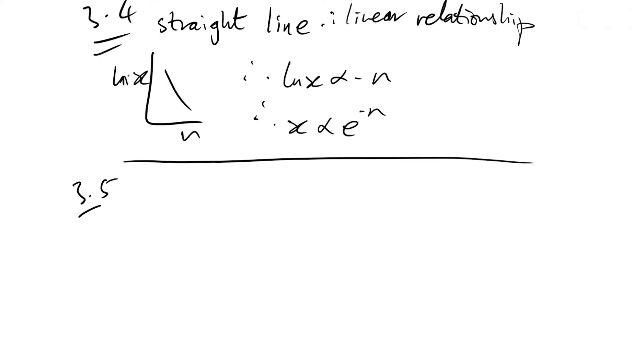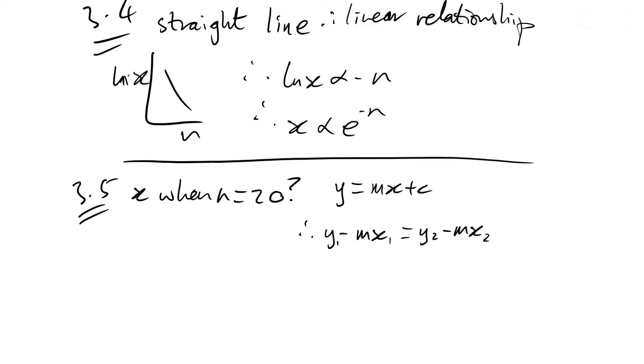According to the mark scheme: x when n is equal to 20. Of course, our graph doesn't go up to 20, so we need to find it algebraically. So just our standard straight line equation: y = mx + c. So therefore we can say for any point, y minus mx is equal to y minus mx. Therefore we can say that y₁ - y₂ = m(x₁ - x₂). So let's swap this out for our actual variables. So we have the log of x at 20 minus another log of x is equal to the gradient times 20 minus another n that we choose.